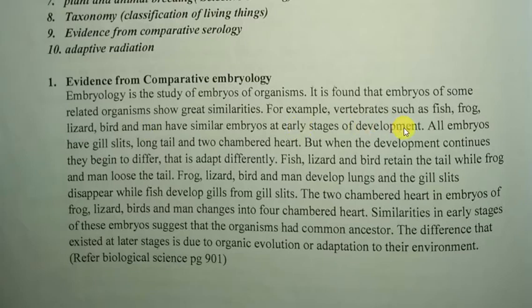At a certain stage of life, all vertebrates look similar in a certain stage of development. All embryos have gill slits, a long tail, and a two-chambered heart. But when development continues, they begin to differ — that is, they adapt differently.